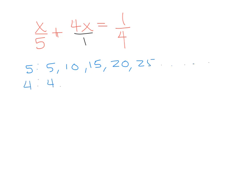Multiples of 4 are 4, 8, 12, 16, 20. So notice they have the 20 in common. That would be your least common multiple.